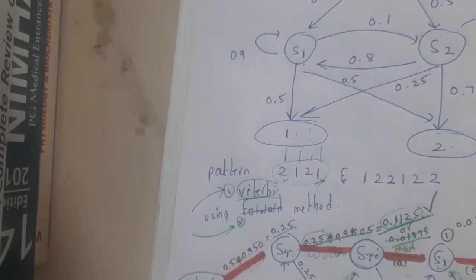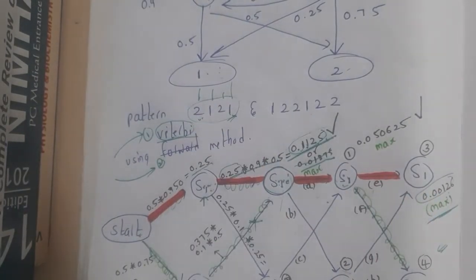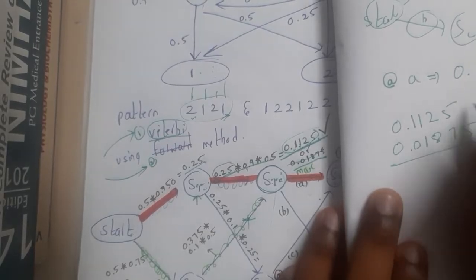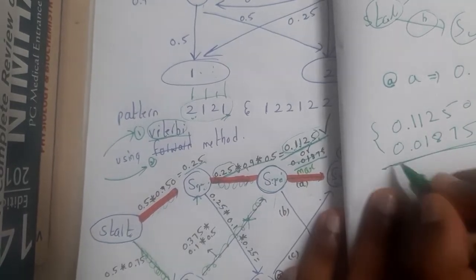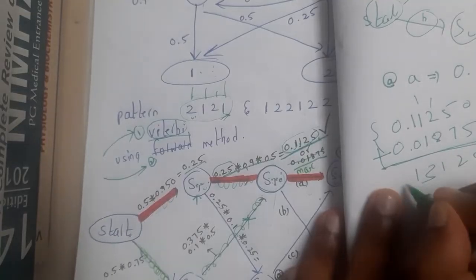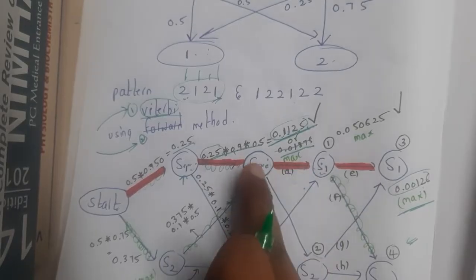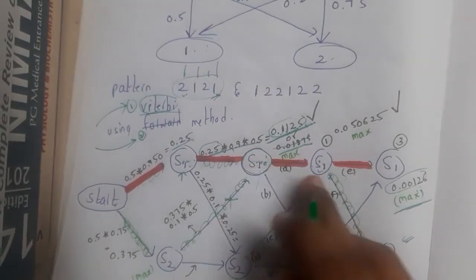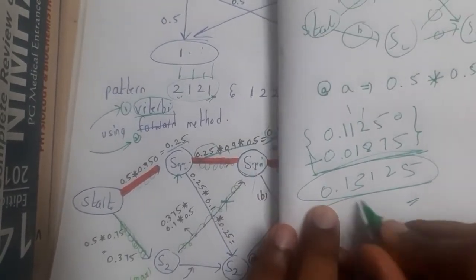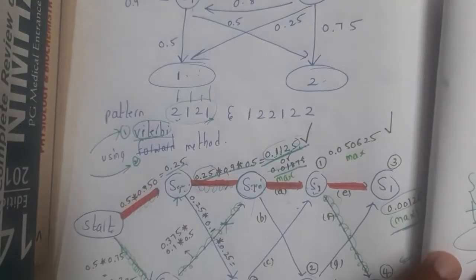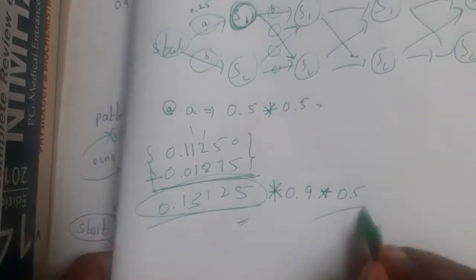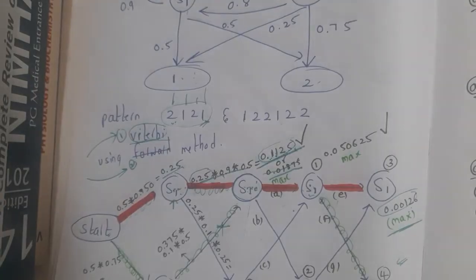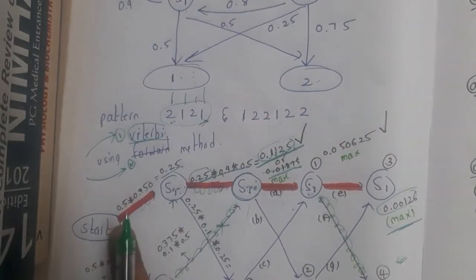For the Forward method, everything is almost the same. The only change is: whenever there are two entries at a node - for example 0.1125 and 0.01875 - instead of selecting the maximum, you add them. You continue with the added value from that node onward. You still multiply the three values for each arrow, but add at convergence points. At the very end, you still find the maximum.